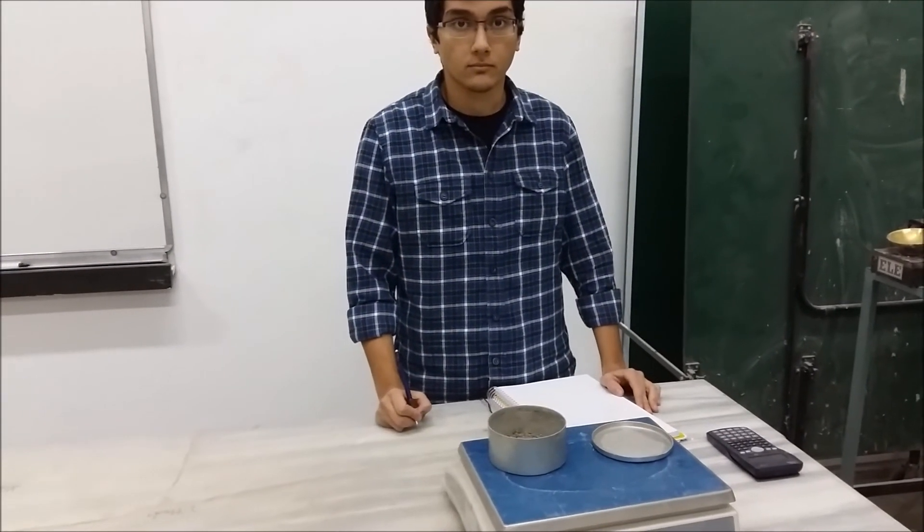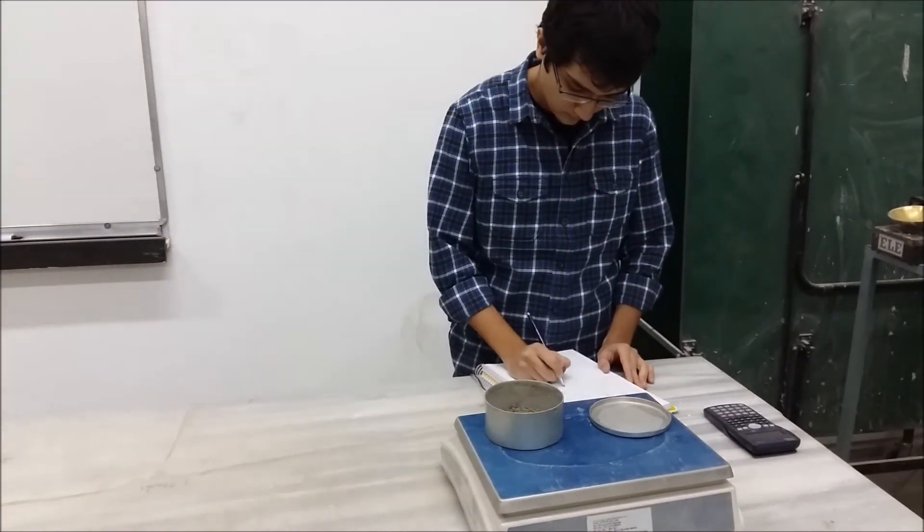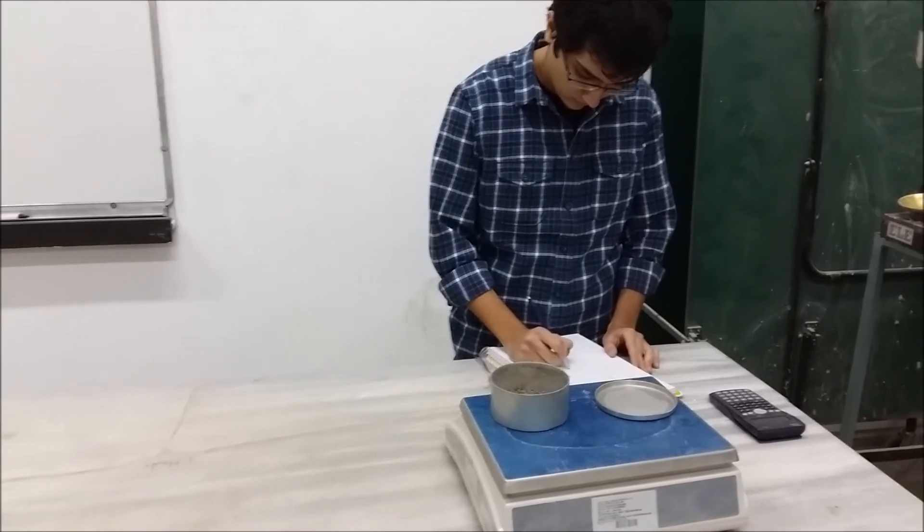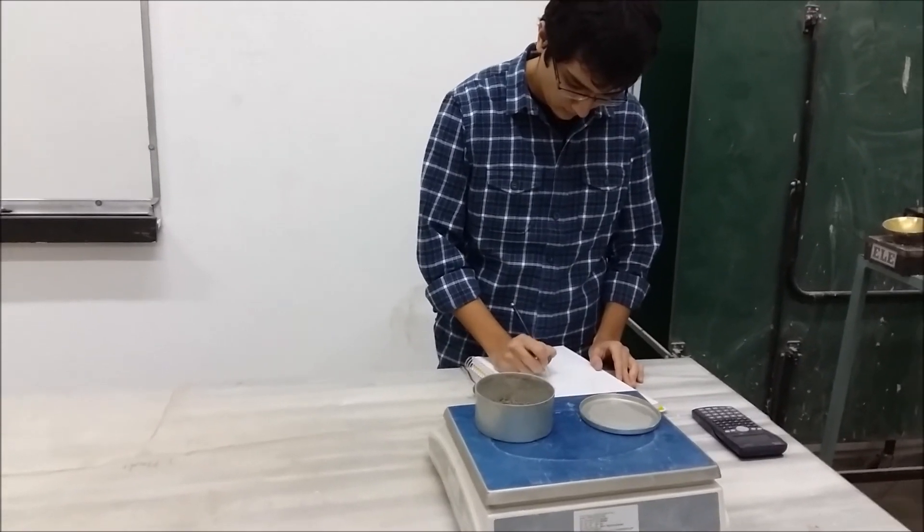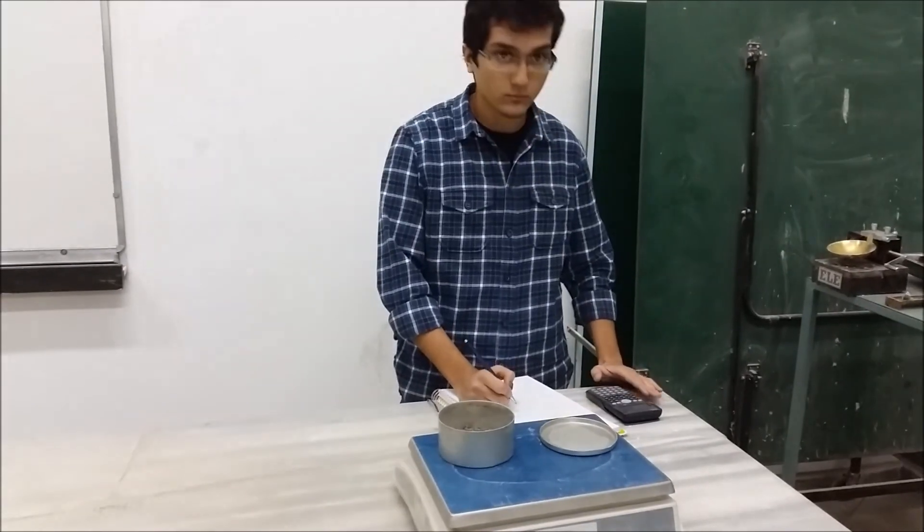First soil mass minus last soil mass equals weight of moisture. And if we determine the weight of dry soil, water content can be determined. Thank you.